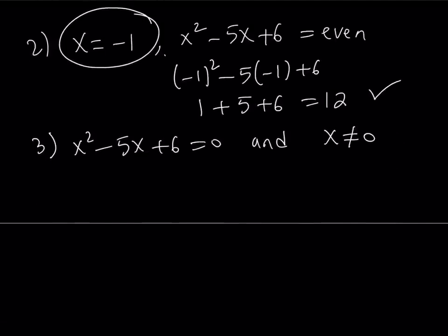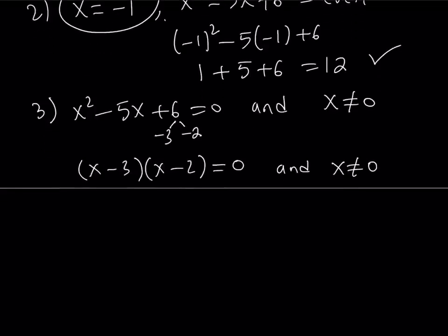Well, x squared minus 5x plus 6 is factorable. As you know, we're looking for two numbers whose product is 6 and whose sum is negative 5. And those numbers are negative 3 and negative 2. So you can write this as x minus 3 times x minus 2 as a product equals 0. And you don't want x to be 0. So from here, using the zero product property, I can safely say that if x minus 3 equals 0, then x equals 3. If x minus 2 equals 0, then x equals 2.